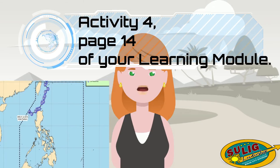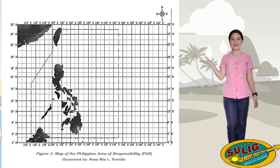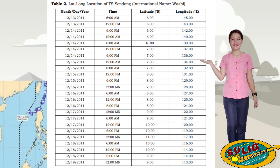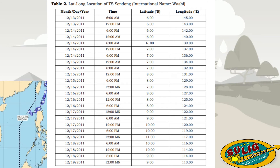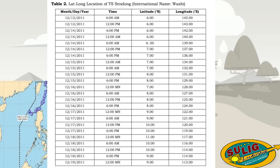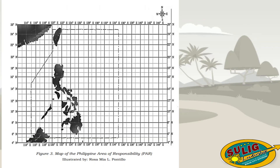Now that you have understood typhoons better, let's track their pathway. Please refer to Activity 4 on page 14 of your learning module. Let's plot on the map in Figure 3 on page 15 the location and pathway of Tropical Storm Sindong, using the latitude and longitude locator in Table 2 as shown in your module on page 14. Table 2 has four columns showcasing the lat-long location of Tropical Storm Sindong, international name Washi, with a 7-day track from December 13 to December 19, 2011. The third and fourth columns show the latitude and longitude location, and Figure 3 shows the map of the Philippine Area of Responsibility where we can plot and track Tropical Storm Sindong.